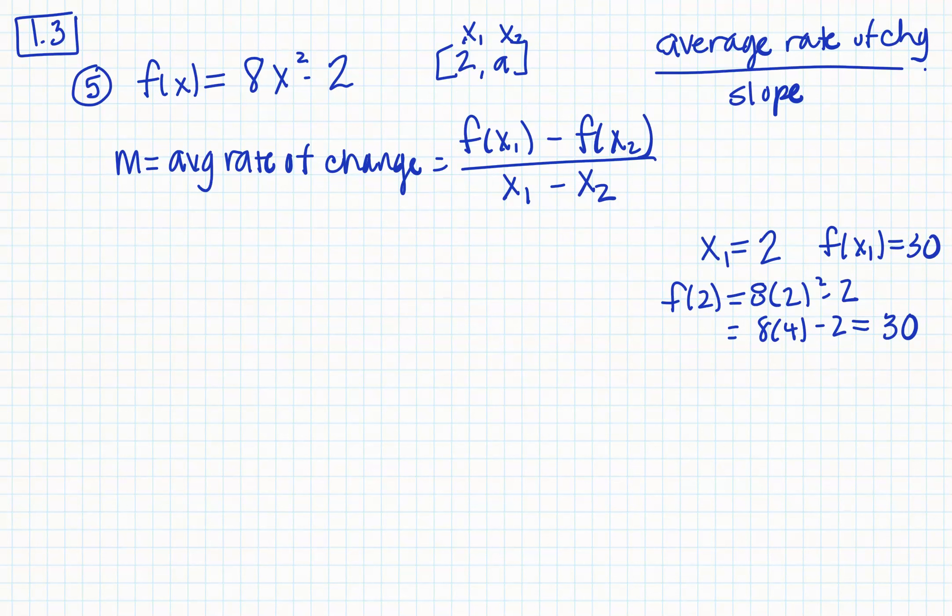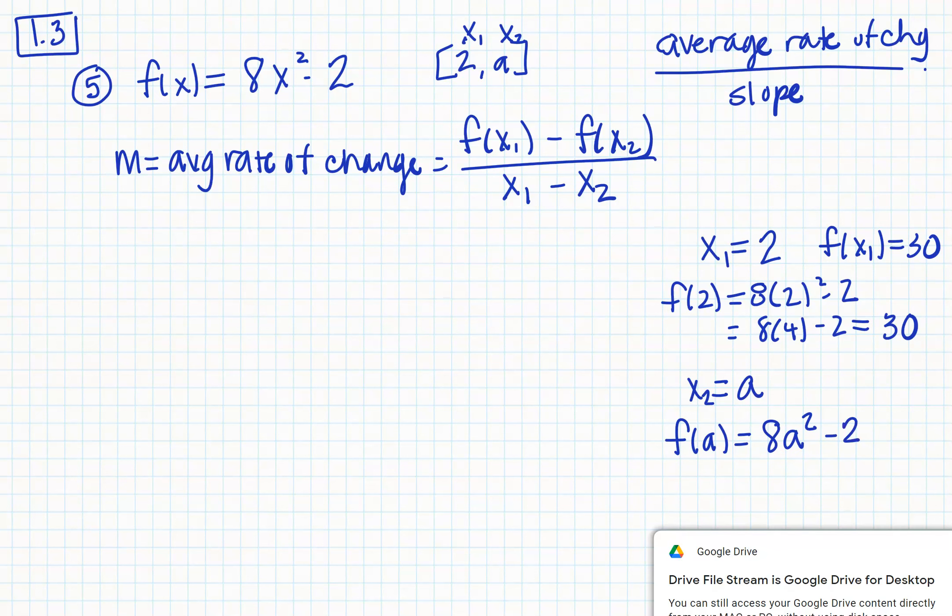Let's do the same thing with a, just so we can get our data and then plug that back in. So x2 is equal to a, so I'm going to say f of a would be equal to 8a squared minus 2. And really, I can't do much with that, and so that's going to be my f of x2. That will be 8a squared minus 2.